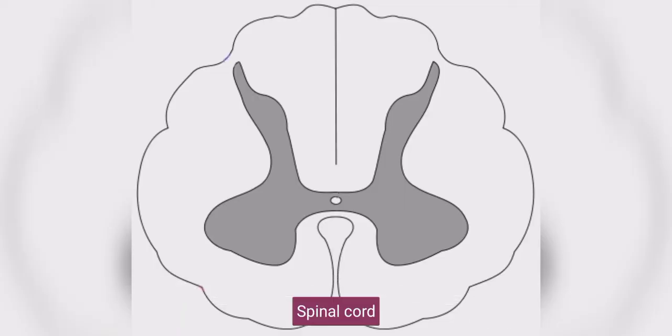In the spinal cord we have the anterior grey horn where inhibitory cells are present called Renshaw cells.